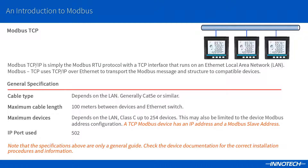Modbus TCP devices require an Ethernet connection to the local area network. This can incur a high install cost but can also offer many more devices connected to the system with a more flexible installation topology. The number of TCP devices can also depend on the device address limitations, so be sure to check the device documentation. Each TCP device requires an IP address and a Modbus device slave identifier address from 1 to 247.